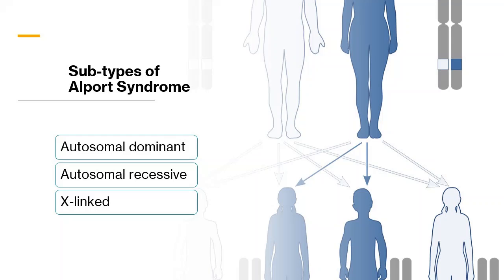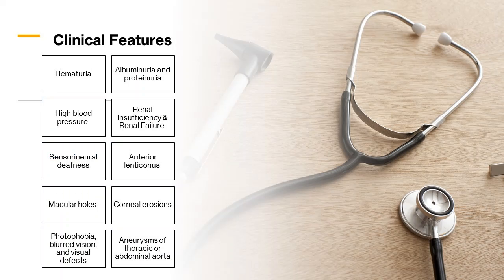There are three subtypes of Alport syndrome: first is autosomal dominant, second autosomal recessive, and the third is X-linked. Variations may occur in the clinical manifestations of the disease, ranging from a mild to severe course. Disease progression is more common in males with Alport syndrome than in affected females.